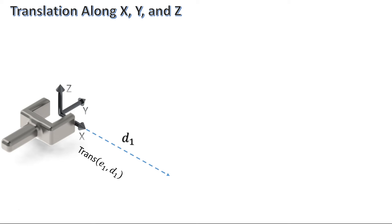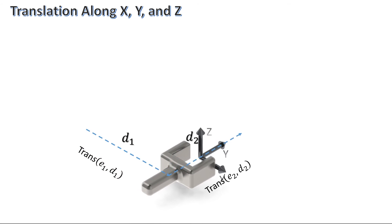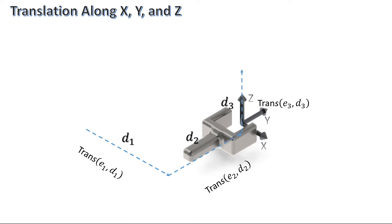Translation matrices are a bit easier to remember. This is the notation and movement for translating along the x-axis, y-axis, and z-axis.